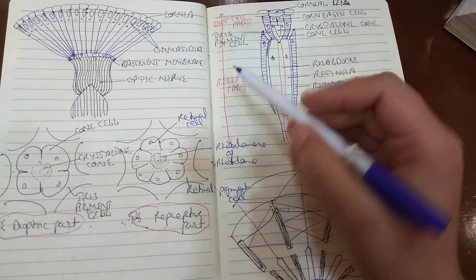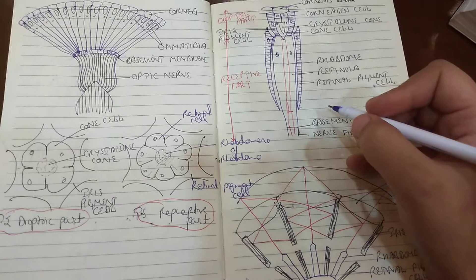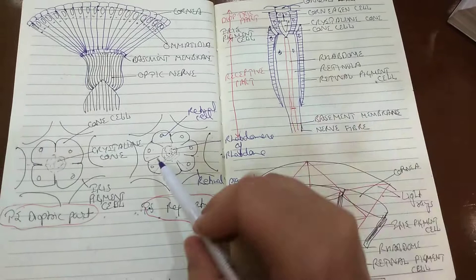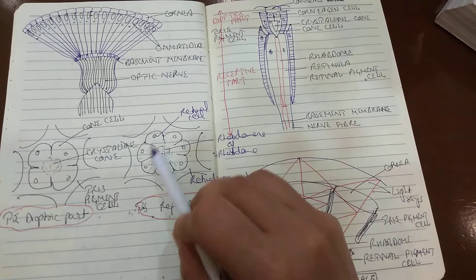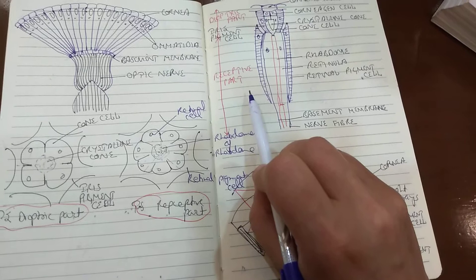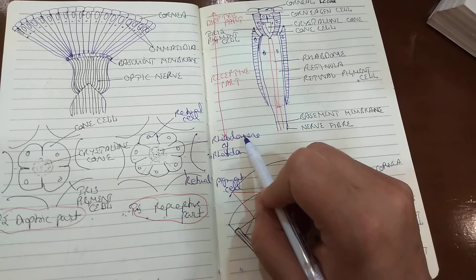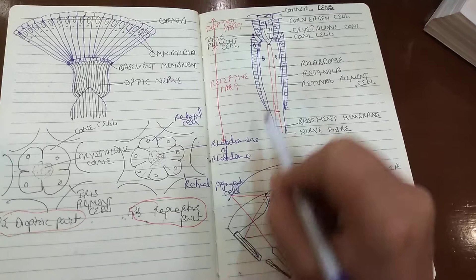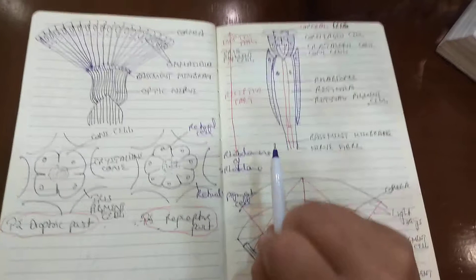Then comes the receptive part, which receives the image and sets up a nerve impulse. It lies internal to the dioptric part and consists of a tier of seven cells referred to as the retinal cells. The inner ends of the retinal cells differentiate to form the rhabdomere, and all the rhabdomeres together form a long refractile rod called the rhabdom. It rests on the basement membrane and ends into a nerve fiber going to the optic nerve.